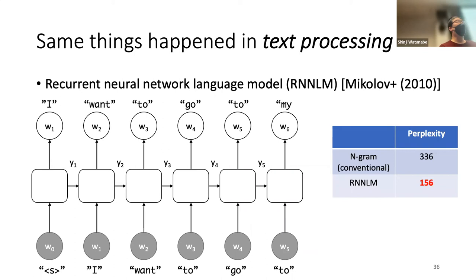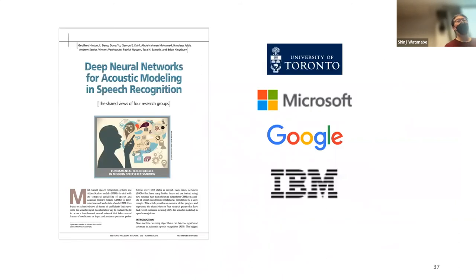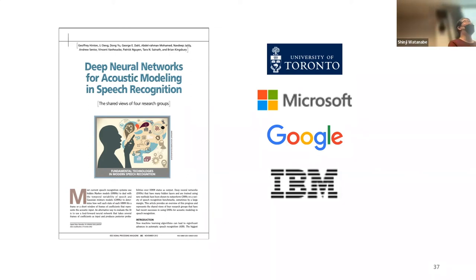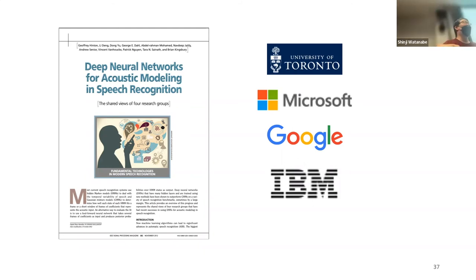Another paper that established deep learning in the speech community was 'Deep Neural Networks for Acoustic Modeling in Speech Recognition.' This wasn't just showing one technique — it brought together people from University of Toronto, Microsoft, Google, and IBM to show that the improvement was solid across all their implementations and databases. This paper is now one of the most cited papers in speech recognition.